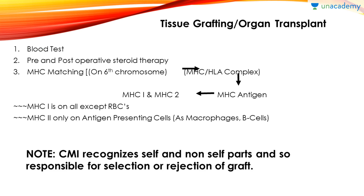On the sixth chromosome, the MHC-HLA complex is located. MHC antigen is of two types: MHC 1 and MHC 2. MHC 1 is present on all nucleated cells except RBCs — everyone has MHC 1. MHC 2 is only on antigen presenting cells — the cells which present antigens to the immune system.